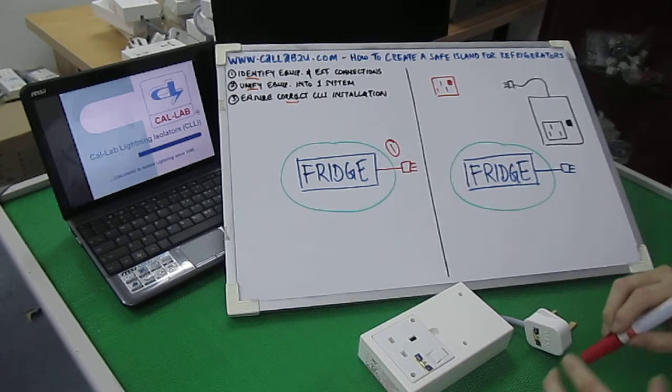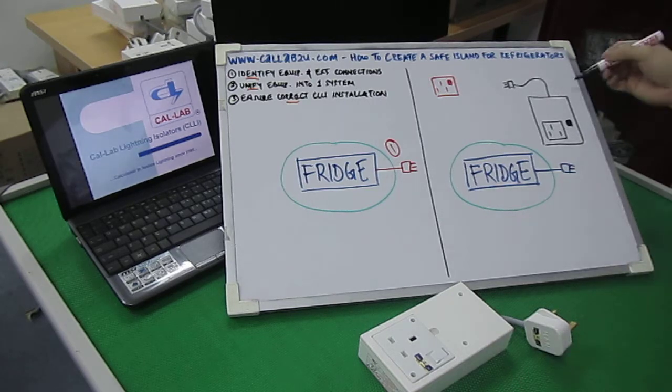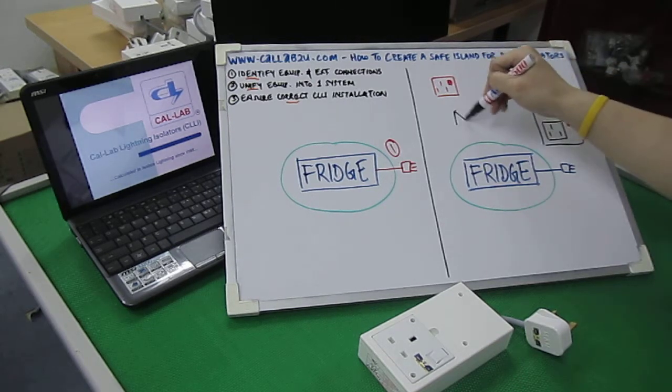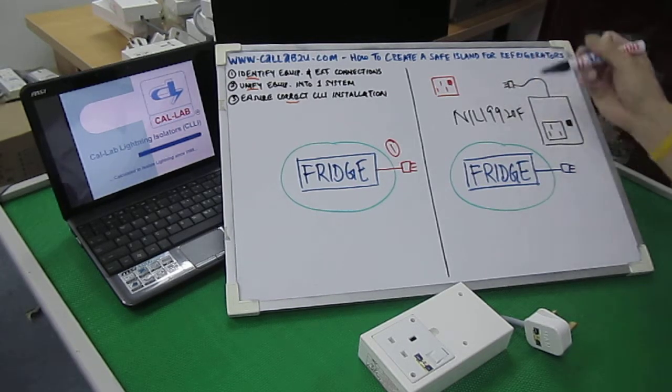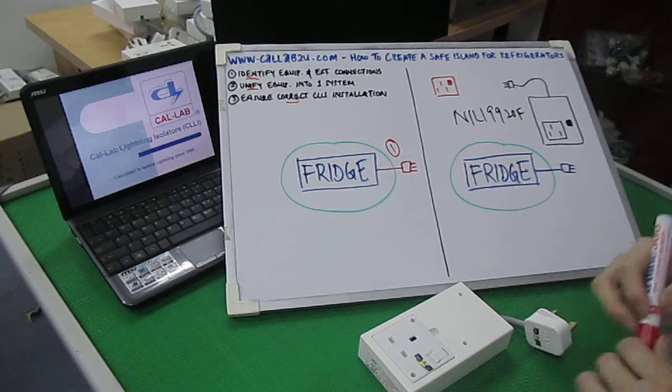Step two is to unify the equipment into a single system. To do that, we need to use the correct lightning isolator model. In this particular case, we have the NILI 9920F or NILI for short. Let's take a look at the correct installation here.